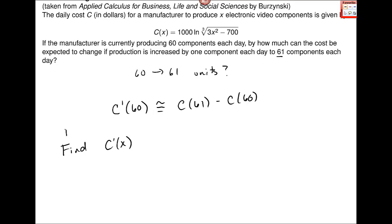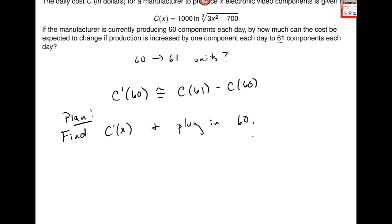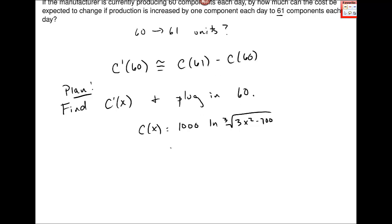This is my plan. Find C'(x) and plug in 60. So I go back to C(x) and that's 1,000 natural log cubed root of 3x squared minus 700. I don't like that cube root in there so I'm going to try and simplify that. That's 1,000 natural log and cube root is the same thing as to the 1 third power.